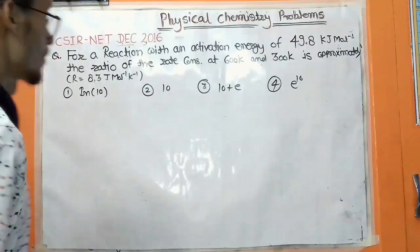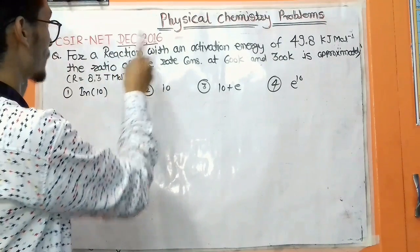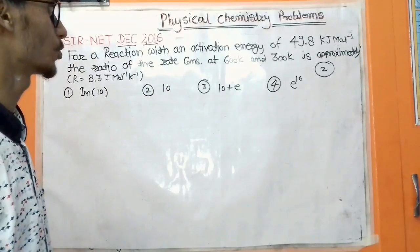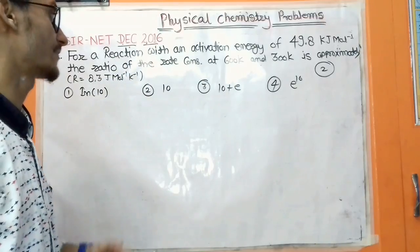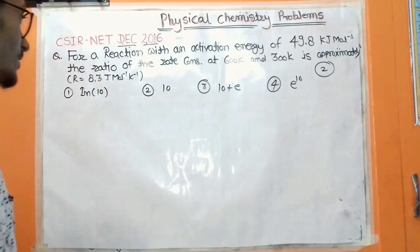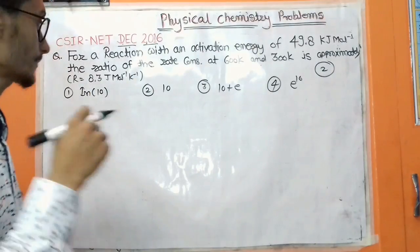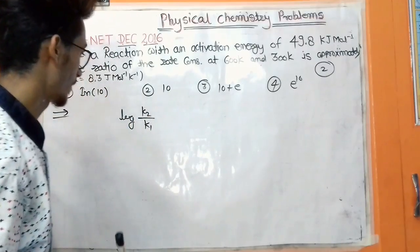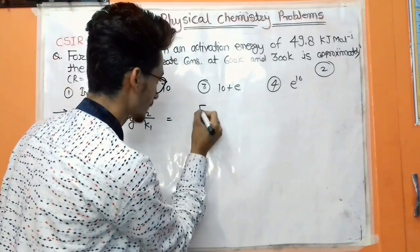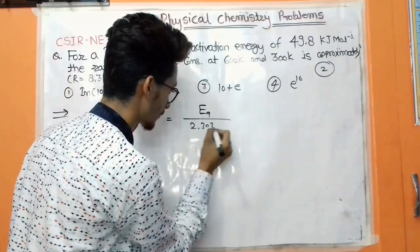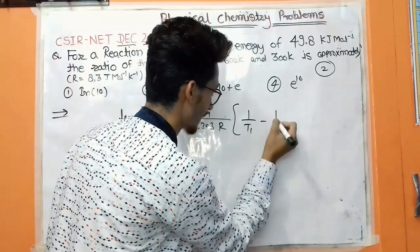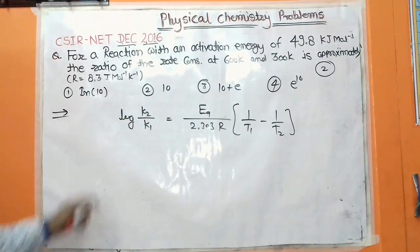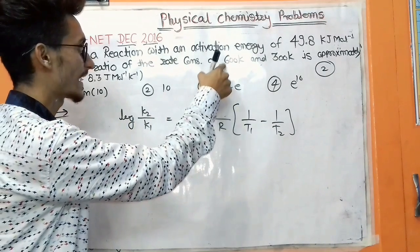The second problem comes from December 2016 and carries two marks. For a reaction with an activation energy of 49.8 kJ/mol, we need to find the ratio of the rate constant at 600 K and 300 K. The value of R is given. According to the Arrhenius equation: log(k₂/k₁) = (Eₐ / 2.303R) × (1/T₁ − 1/T₂).